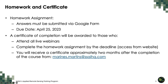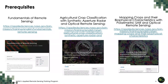Homework will be made available on April 11th, with a due date of April 25th. A certificate of completion will be awarded to those who attend all live webinars and complete the homework assignment by the deadline. You will receive a certificate approximately two months after the completion of the course. The prerequisites for this three-part training are the Fundamentals of Remote Sensing Session 1, Agricultural Crop Classification with Synthetic Aperture Radar and Optical Remote Sensing Part 1, as well as the Mapping Crops and their Biophysical Characteristics with Polarimetric SAR and Optical Remote Sensing.